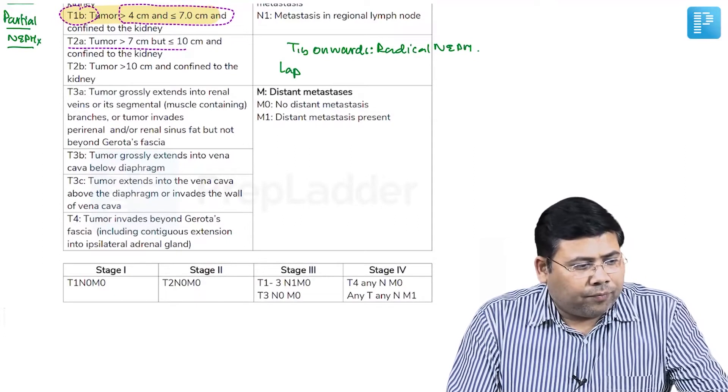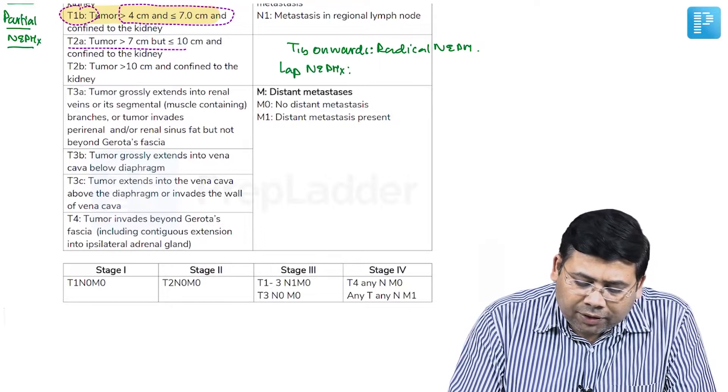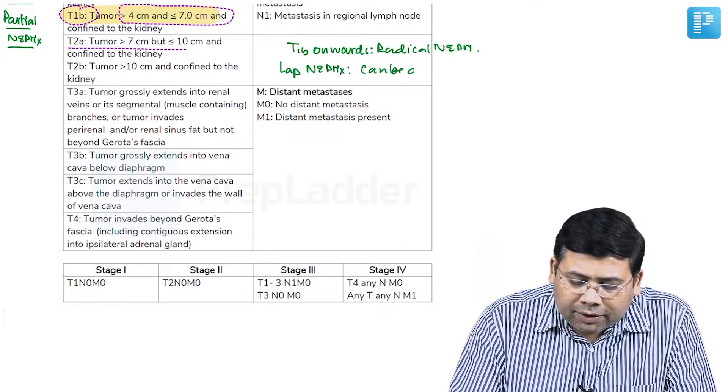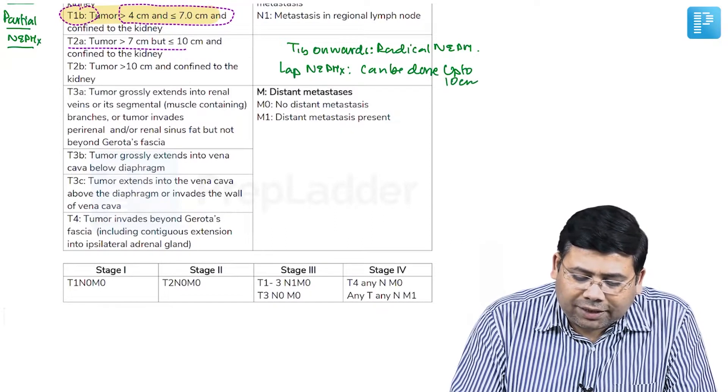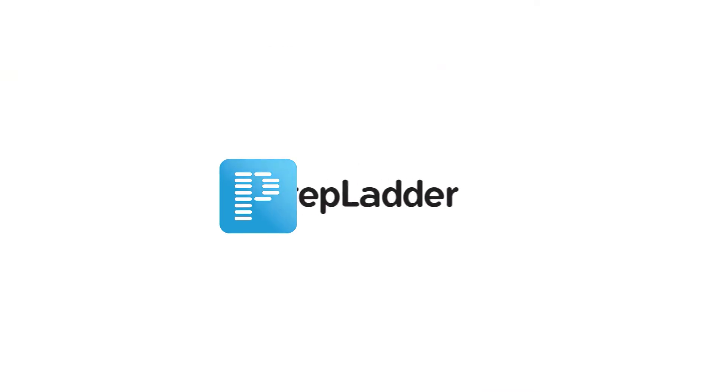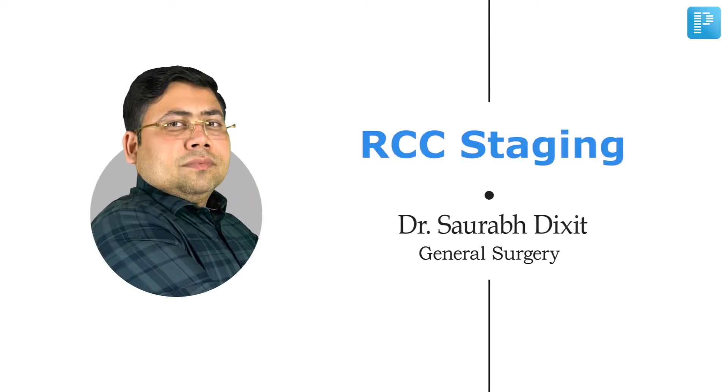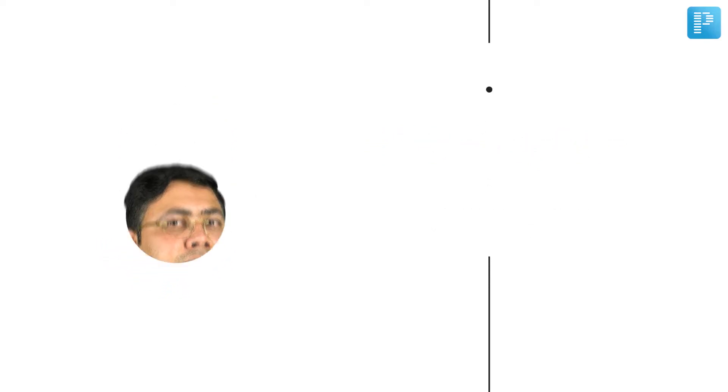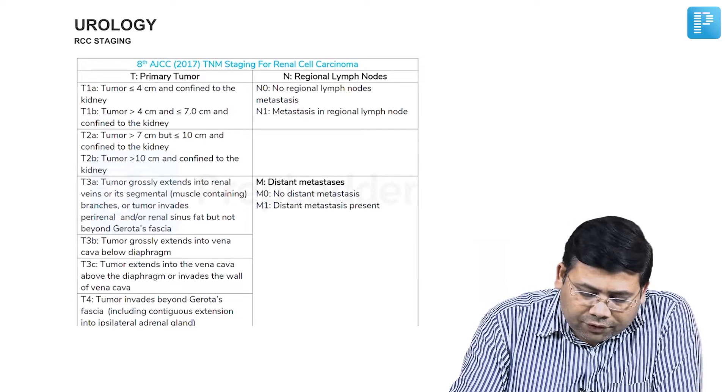Laparoscopic nephrectomy can be done up to 10 centimeters only. Beyond 10 centimeters, we have to go for an open approach. Now let us discuss a very important topic with you, students.